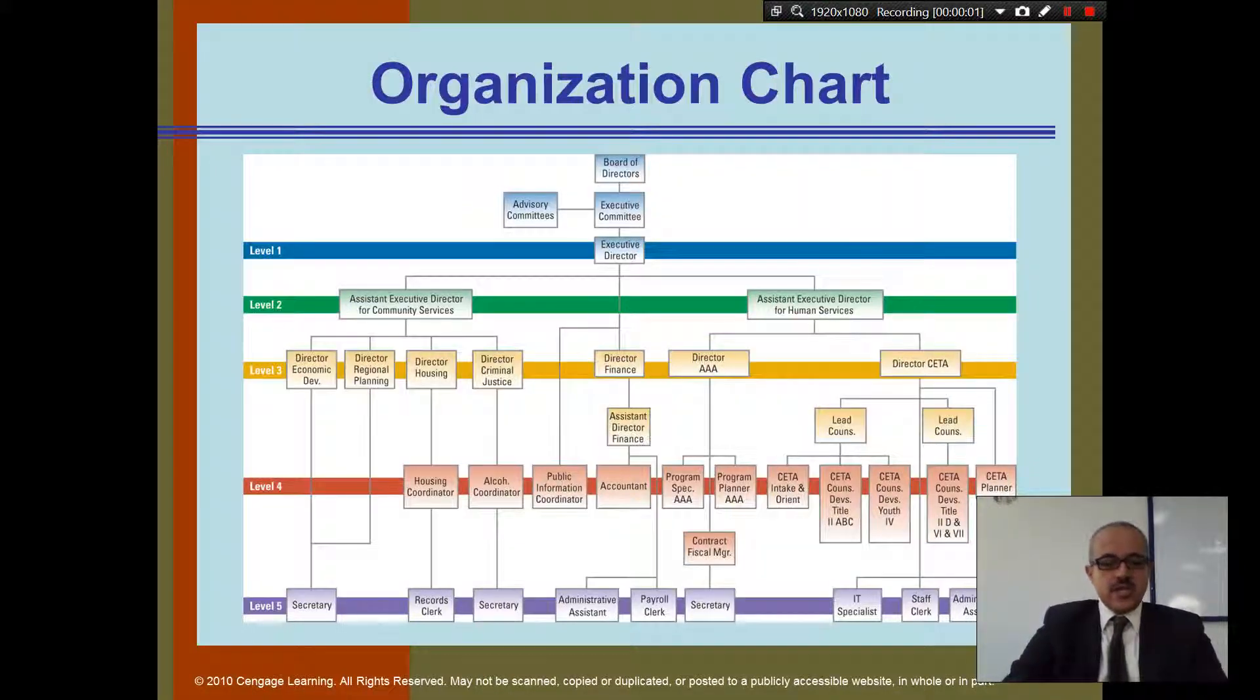This is the organization chart. From this chart you can see the different levels. We have level one which includes the board of directors, executive committee, and an advisory committee.